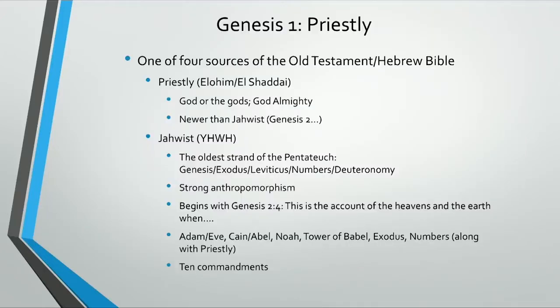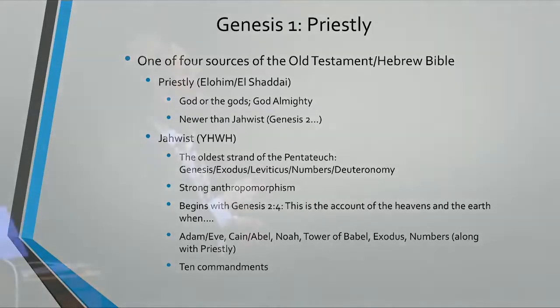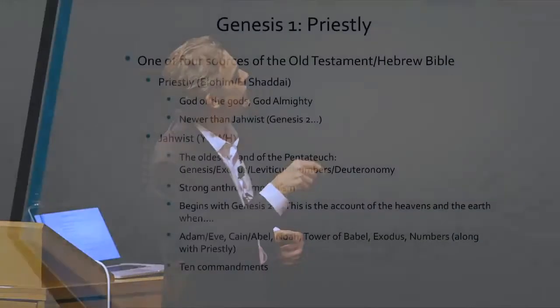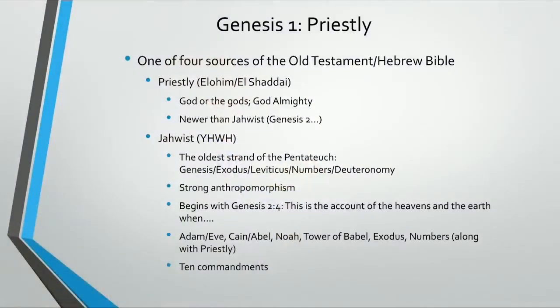There are four sources in the Old Testament or the Hebrew Bible — four stories that we know came together. One is called the Priestly source, and it used the name Elohim or El Shaddai for God. I believe El is the root word for Ella as well. That's usually translated as God or 'the gods,' because Elohim is utilized as plural in the beginning books of the Bible. And it's newer than the Yahwist version.